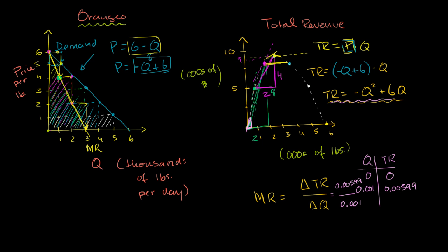Based on what we've done in the last two videos, we've been able to figure out what the marginal revenue curve looks like for the monopolist in the orange market. The marginal revenue curve has a slope twice as steep as the slope of the demand curve, and we'll see that that's actually generalizable. There's an optional video where I prove it with a little bit of calculus.